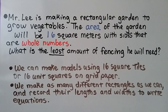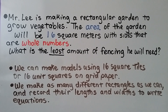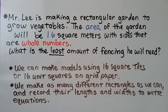Mr. Lee is making a rectangular garden to grow vegetables. The area of the garden will be 16 square meters with sides that are whole numbers. What is the least amount of fencing he will need? To solve this, we can make models using 16 unit squares on grid paper, make as many different rectangles as we can, and record their lengths and widths to write equations.